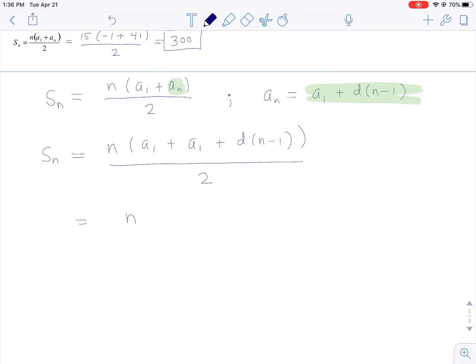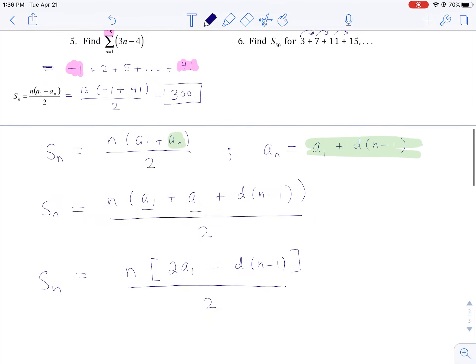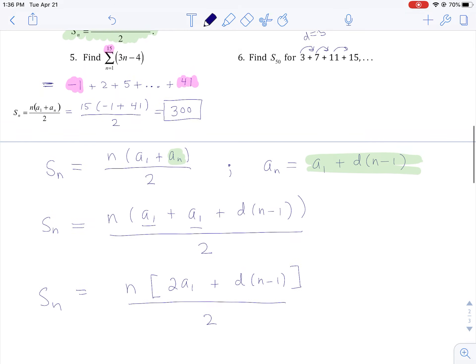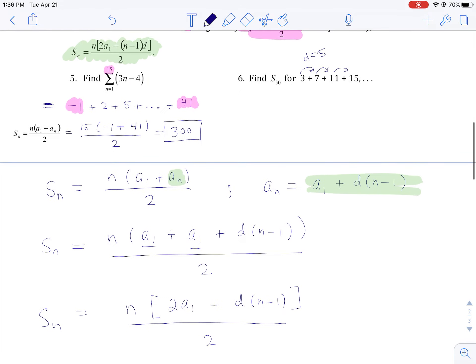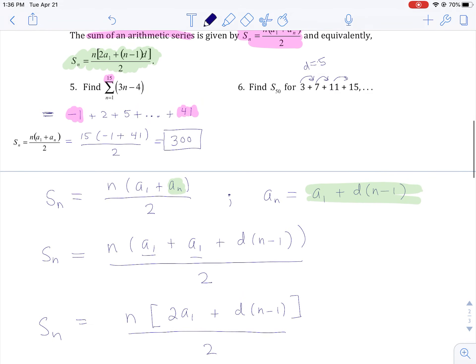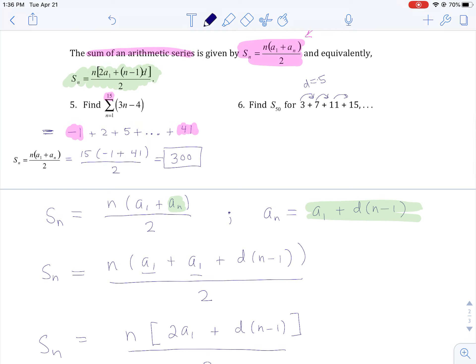And I can just collect some terms here. I got a sub 1 and a sub 1. I got two of those. And I still have this common difference times n minus 1, and it's still over 2. So that's where I get that alternative form. And you see it up here. I have it highlighted in green up above on your worksheet.